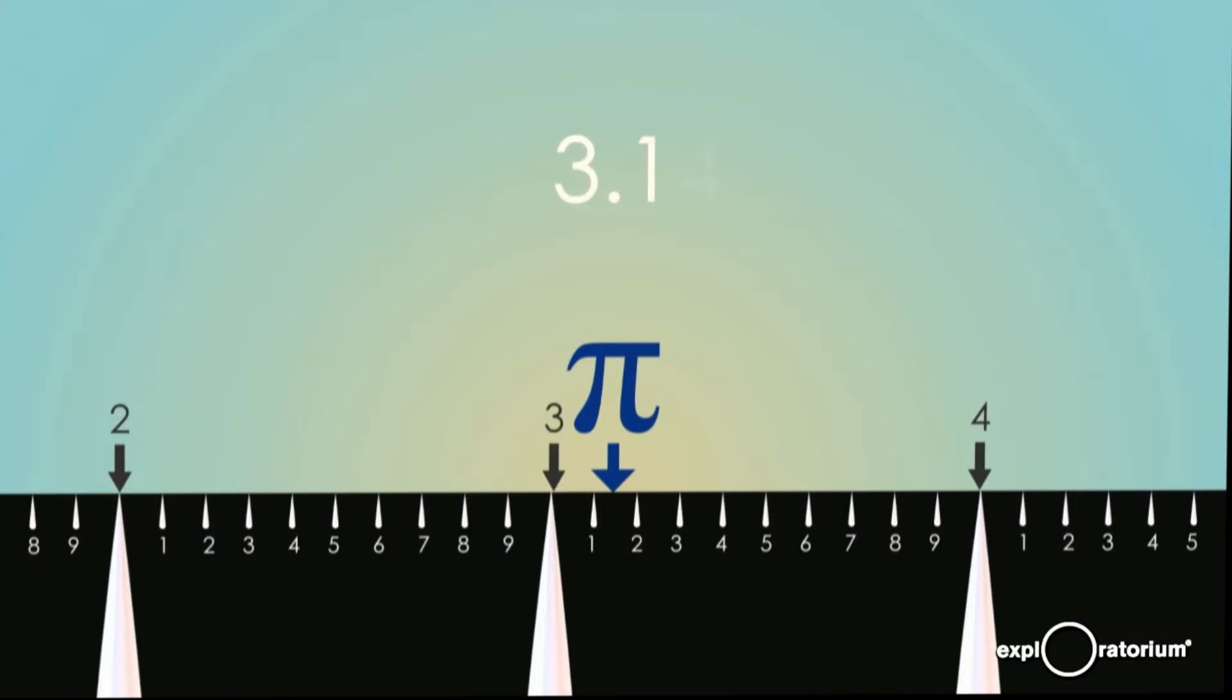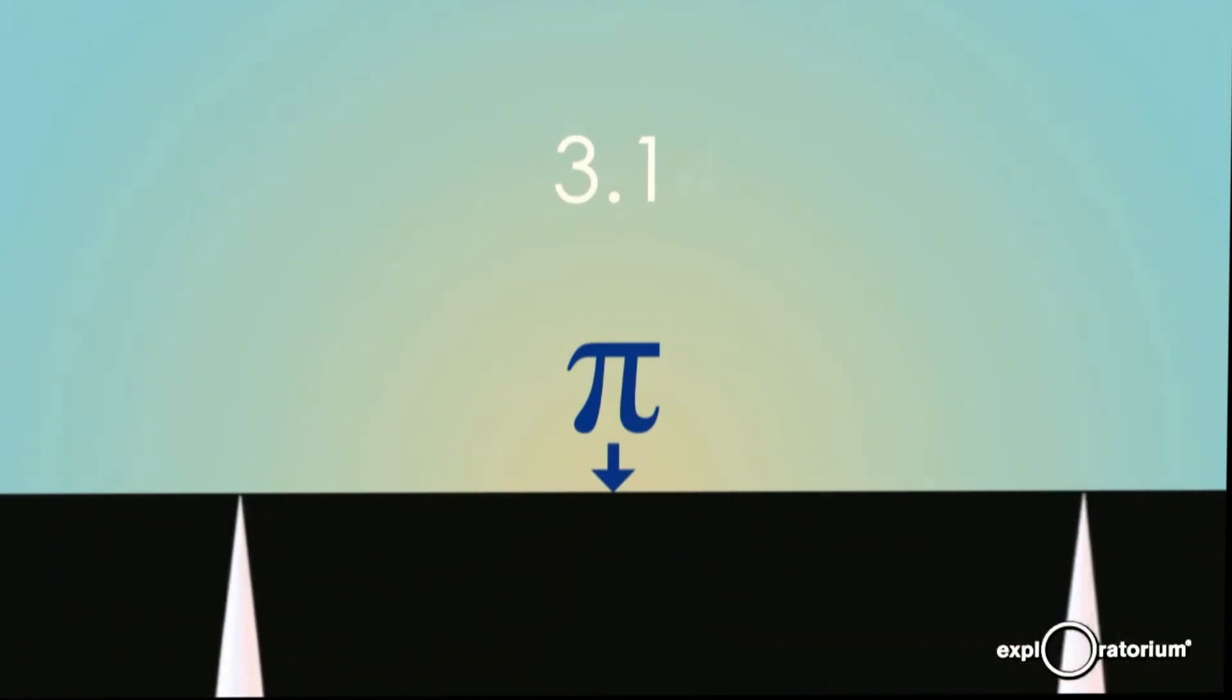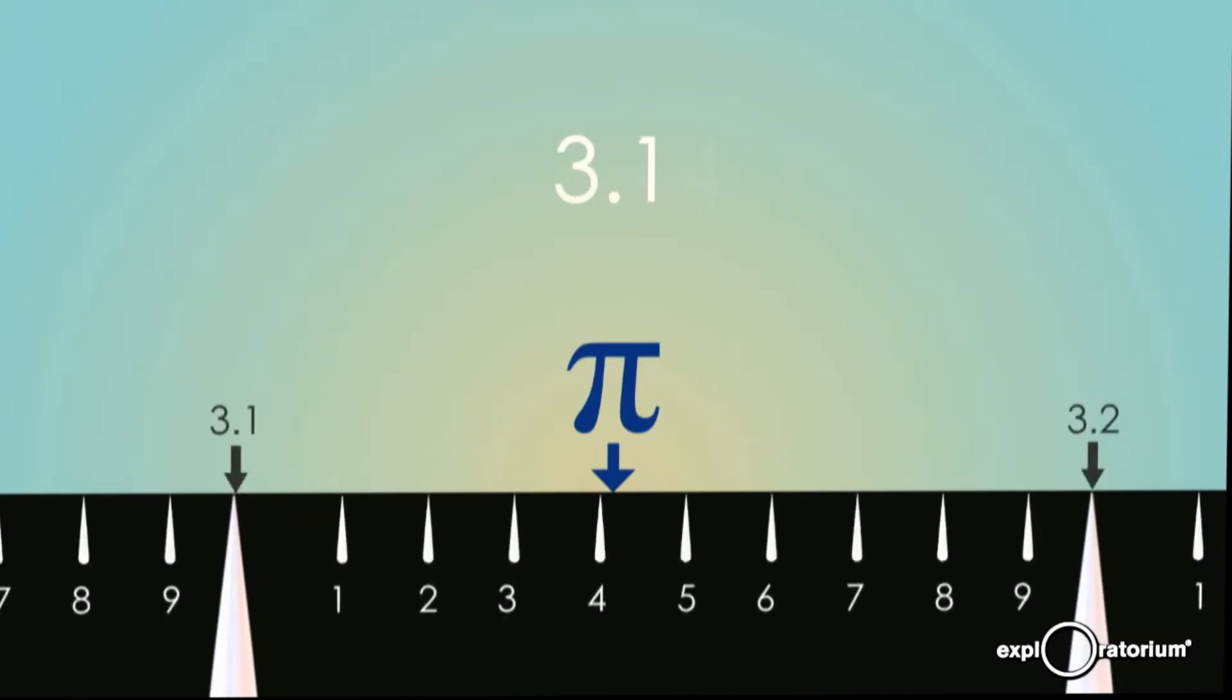So in decimal terms, we can get more specific and say pi is about 3.1. But you'll notice it's not exactly on 3.1, it's actually got a little extra, extra bit more than that. So if we zoom in still further, again, that mark is 3.1 up to 3.2. We can subdivide that space into 10s, and we can see that pi is just a little bit past the four marker. So we can get a little more accurate and say pi is 3.14. But once again, it's not exactly on four, there's still an extra, extra, extra little tiny bit.